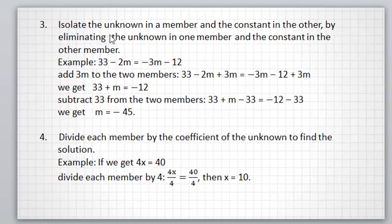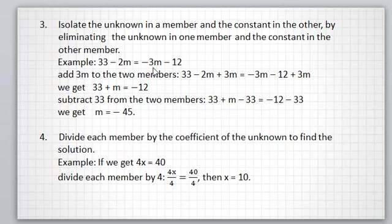Isolate the unknown in one member and the constant in the other by eliminating the unknown in one member and the constant in the other member. Example: if we have the equation 33 minus 2m equal minus 3m minus 12, add 3m to both members to remove minus 3m from the right. We get 33 minus 2m plus 3m equals minus 3m minus 12 plus 3m.